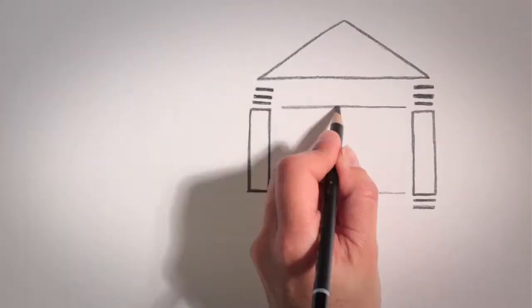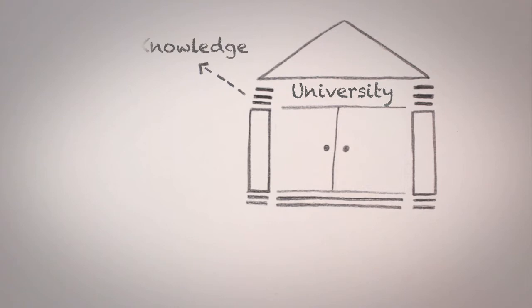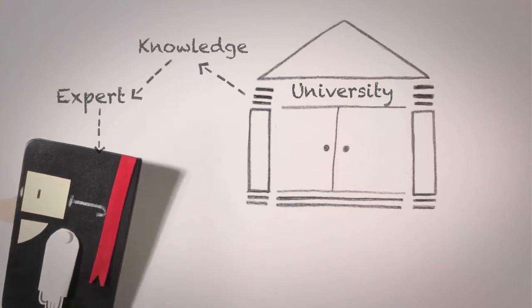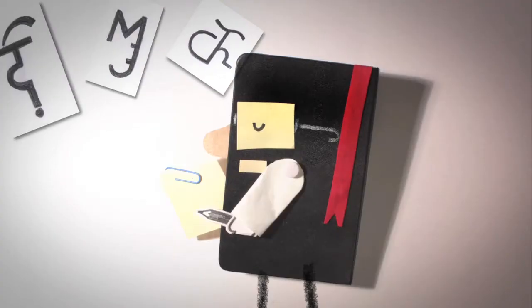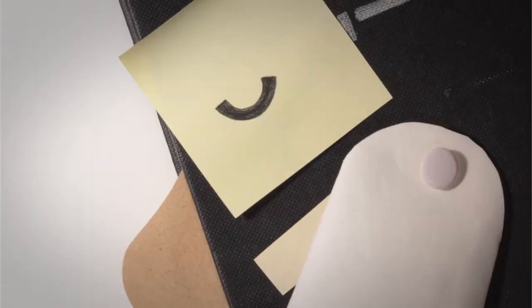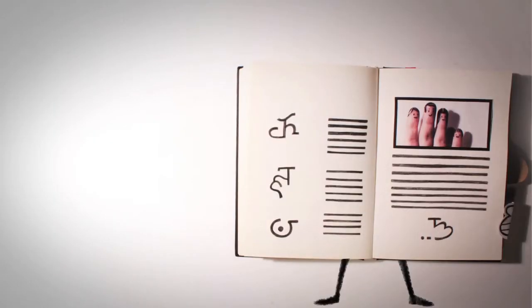So, one way for a university to produce knowledge is like this. An expert finds a community, does their research, writes it up into a paper, and publishes it for everyone to see.